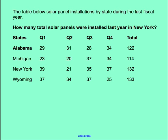I'm going to pause for a minute so you can think about it. So as you notice, there's Alabama, Michigan, New York, and Wyoming. They're asking for New York, so we're just going to zero in on there. They're not asking for Q1, Q2, Q3, or Q4, but the total. So my answer would be 132 solar panels.